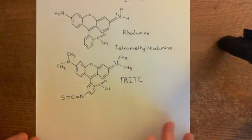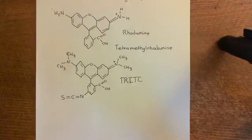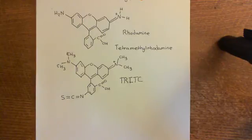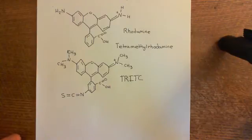So we've seen FITC and TRITC, which are these two very famous examples of fluorochromes which can be used in immunofluorescence. Let's now discuss the physics of fluorescence in a bit more detail.